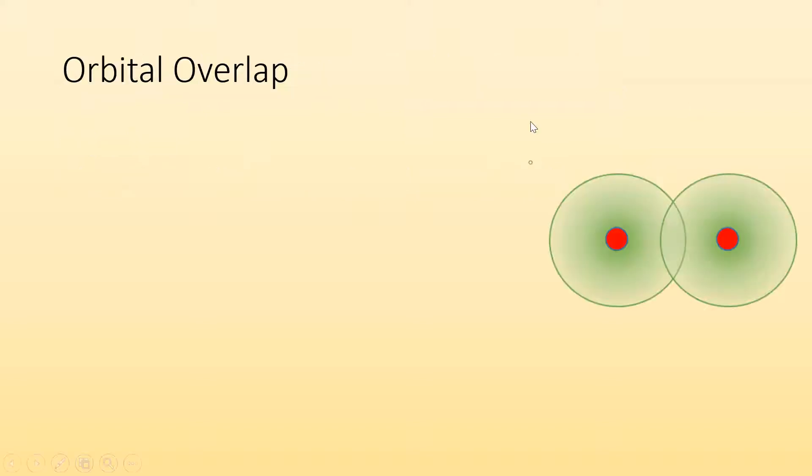So here we go. Orbital overlap, what is that? The valence shell electron pair repulsion model predicts the shapes well for molecules, but you know what it doesn't do? It doesn't explain why atoms bond. It can say what they're going to look like when they're bonded, but it doesn't say why they're bonding.